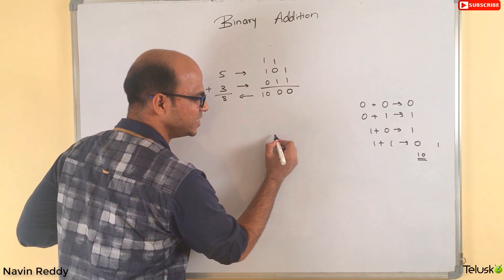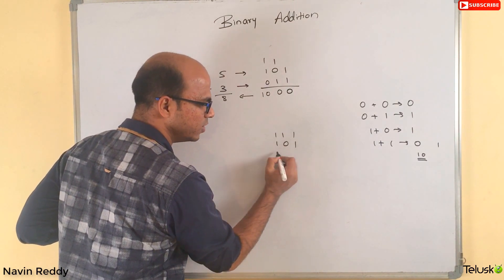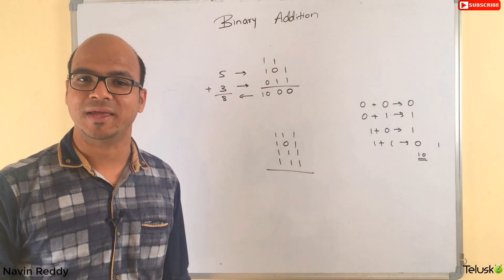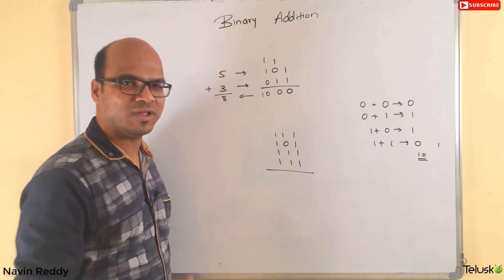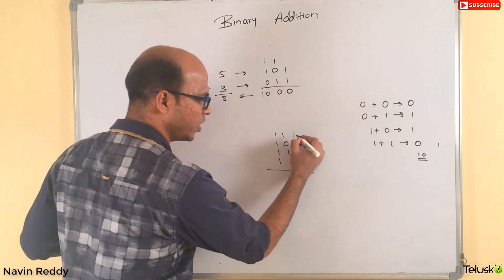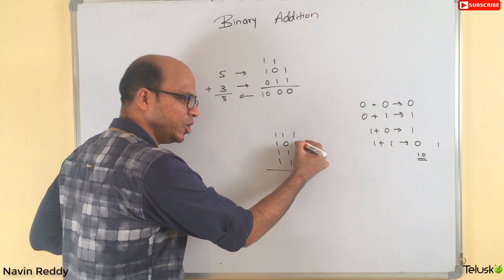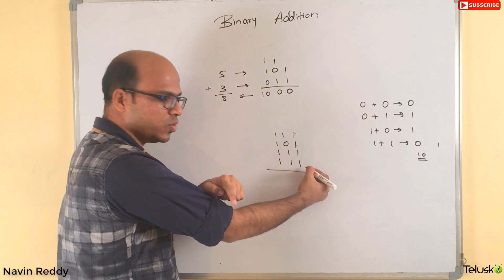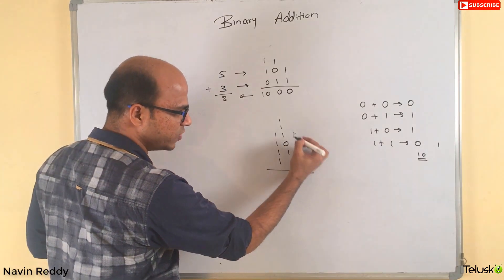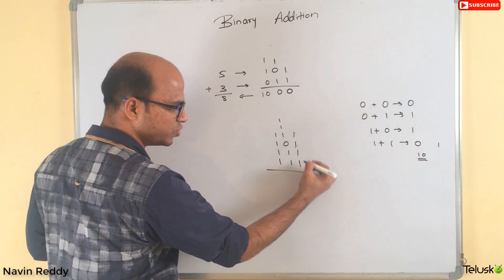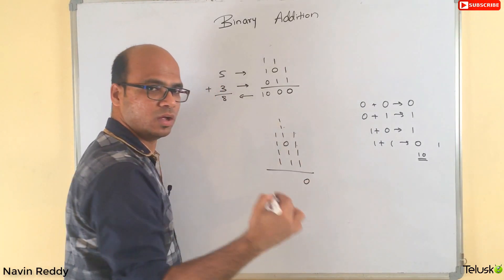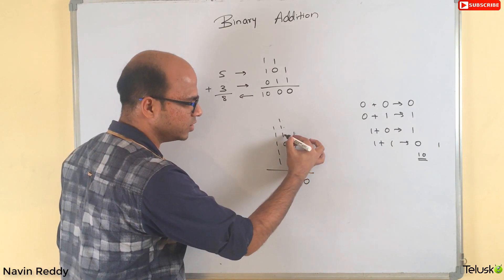The problem starts when you have a large set of numbers to add. For example, if you have numbers like one one one, one zero one, one one one, and one one one all stacked up, how do you add them? It becomes complex because it's difficult to track all the carries. One plus one is zero, zero plus one is one, but then one plus one is zero again, and you can end up with two carries at once.